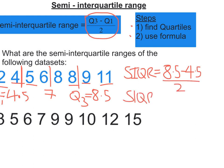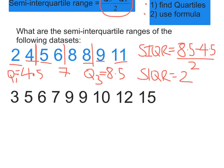So the semi-interquartile range: 8.5 take away 4.5 is 4, divided by 2 is 2. So our semi-interquartile range is 2 for the first one.